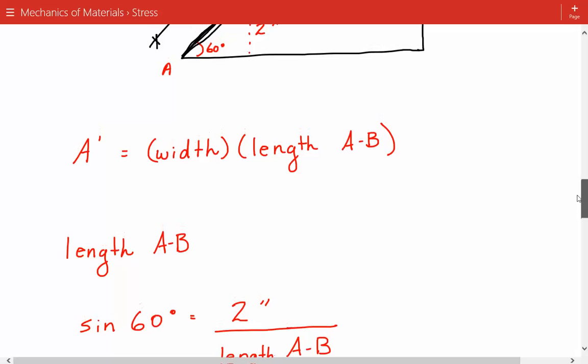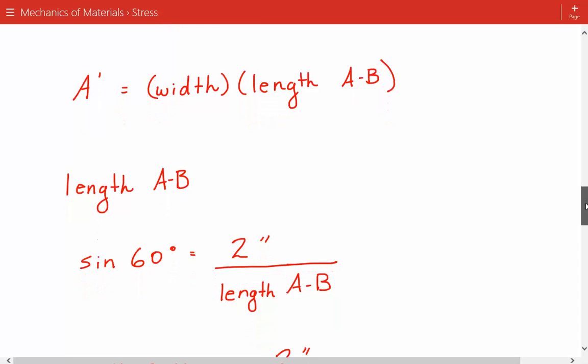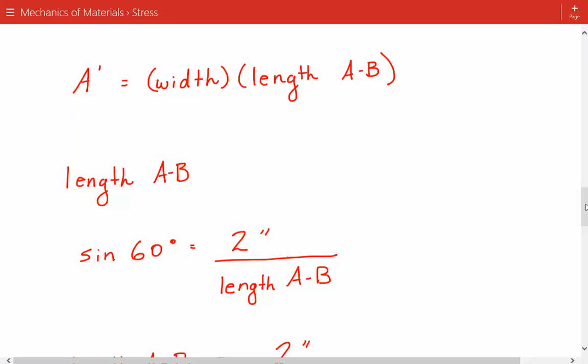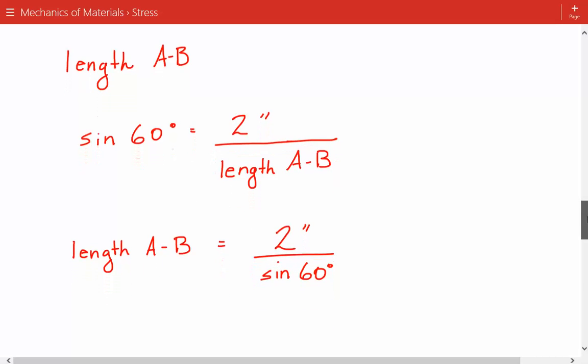And just using basic trigonometry, so sine of 60 degrees is equal to 2 inches divided by length of AB. And this 2 inches is the thickness of the plate that's also shown in the figure. So we rearrange the terms and find that the length AB is equal to 2 inches divided by sine of 60 degrees.